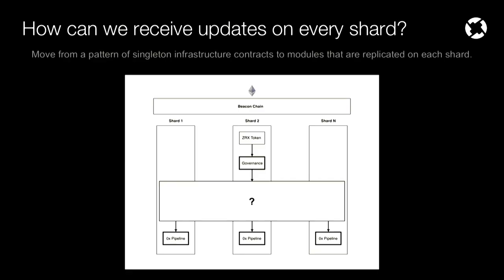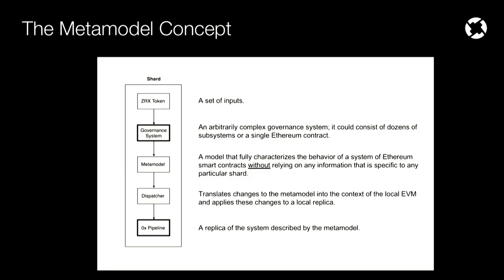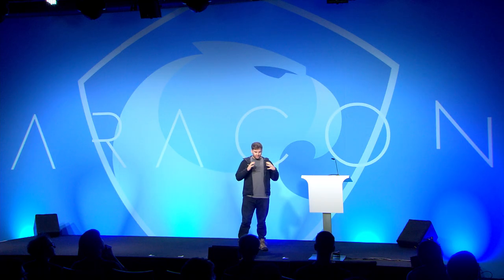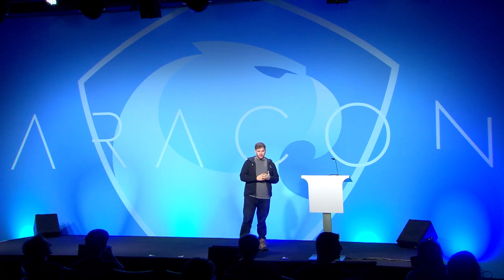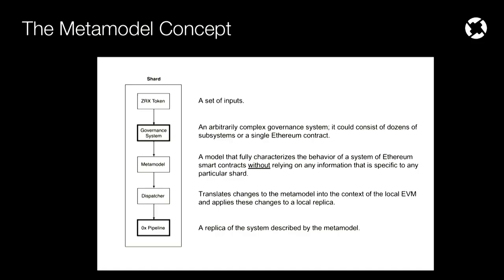This presentation focuses on how we can build one of these systems. At a high level, the metamodel is just a couple of extra layers we add to our generic governance system. We have a shard with a governance token controlling a governance system, and then this governance system is controlling what we call a metamodel. This metamodel describes a system of smart contracts in a way that is agnostic to any particular shard or blockchain and can be generalized to any of them.